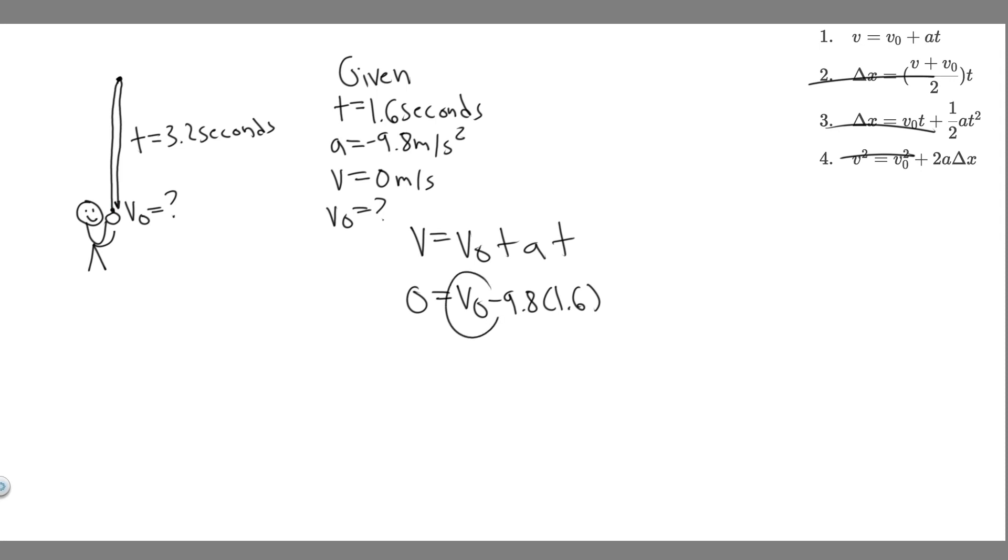If we're solving for v₀, we add this to the other side. Essentially, the initial velocity is going to be equal to the acceleration due to gravity times the time. So 9.8 times 1.6. When you do that, you'll get v₀ equals 15.68. The units for velocity are meters per second. So the initial velocity that she throws it at, the upward speed of the ball, is 15.68 meters per second.